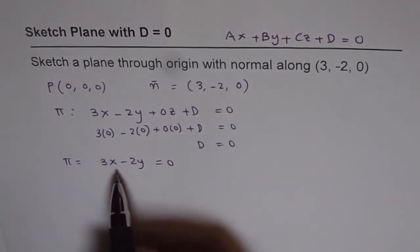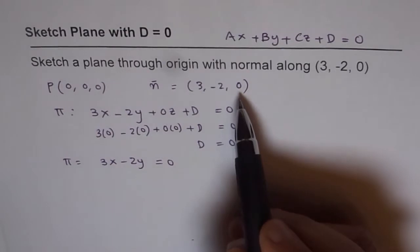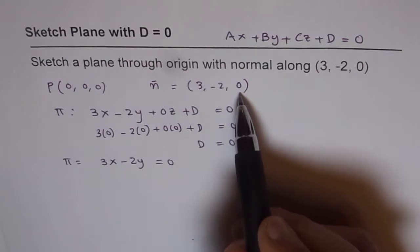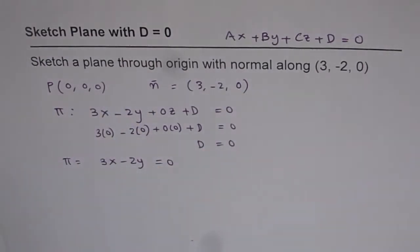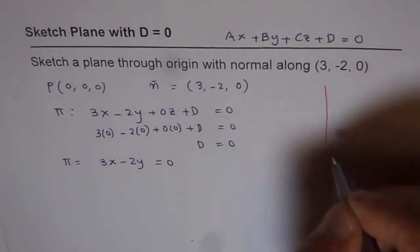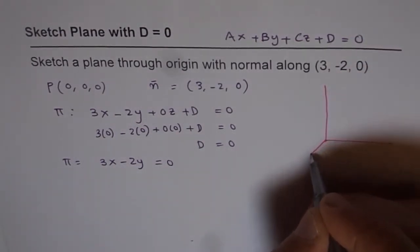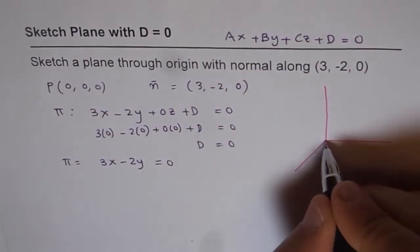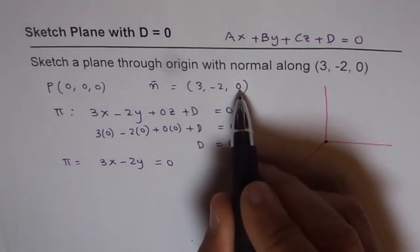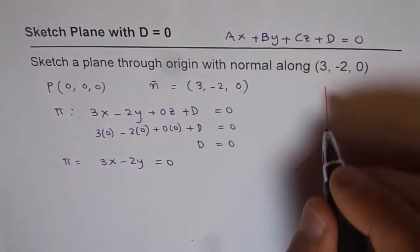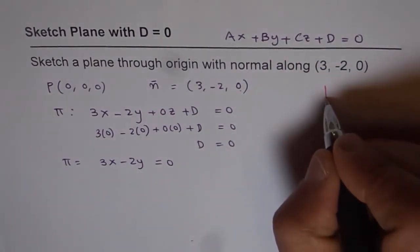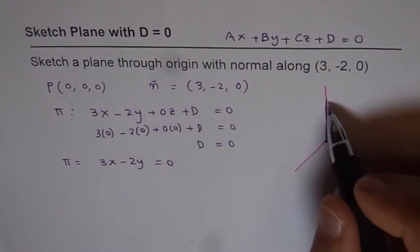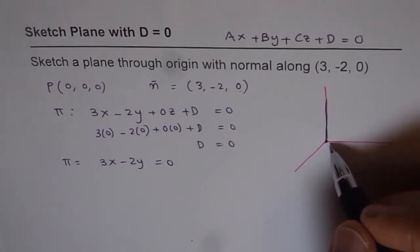Since the normal has no component along the z-axis, we know that the plane should be parallel to the z-axis. Furthermore, since the origin is on the plane and there is no component along the z-axis, the z-axis is actually contained in the plane itself. It's kind of like a binder in a book with some leaves — that is how the plane will look.